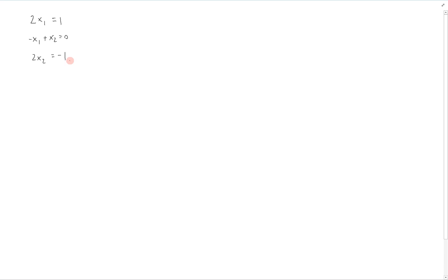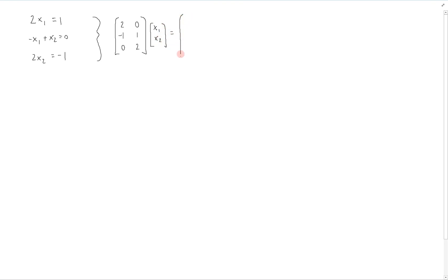We can rewrite this as a matrix-vector equation with the coefficients in the matrix: 2, 0, negative 1, 1, 0, 2, times the vector x which is x1 and x2, is equal to our constants vector 1, 0, negative 1. That's the same as the system of equations, and therefore we have A, x, and b.